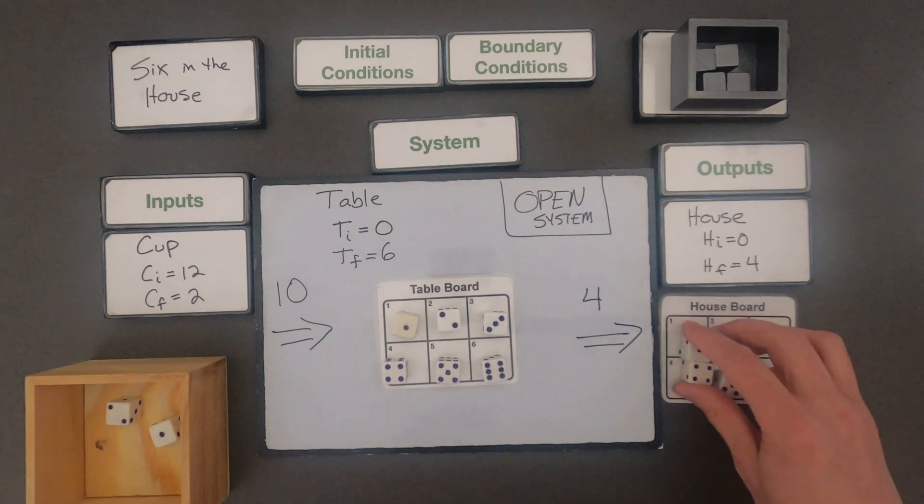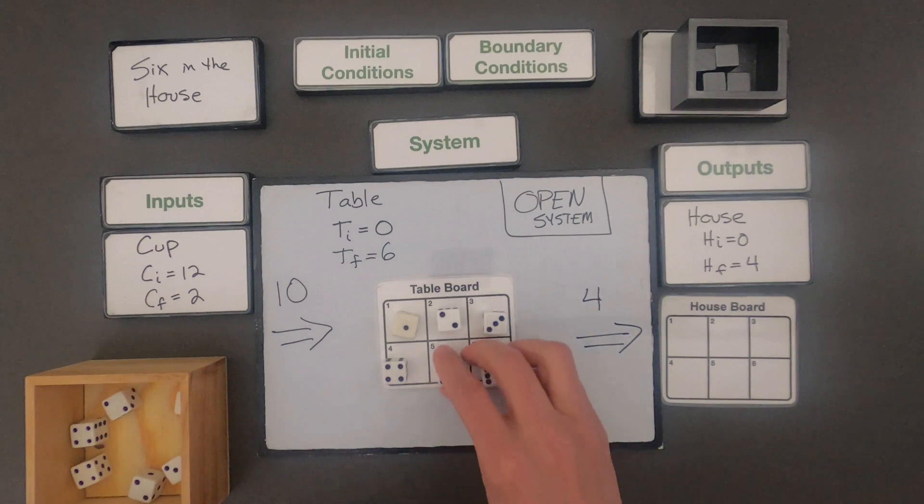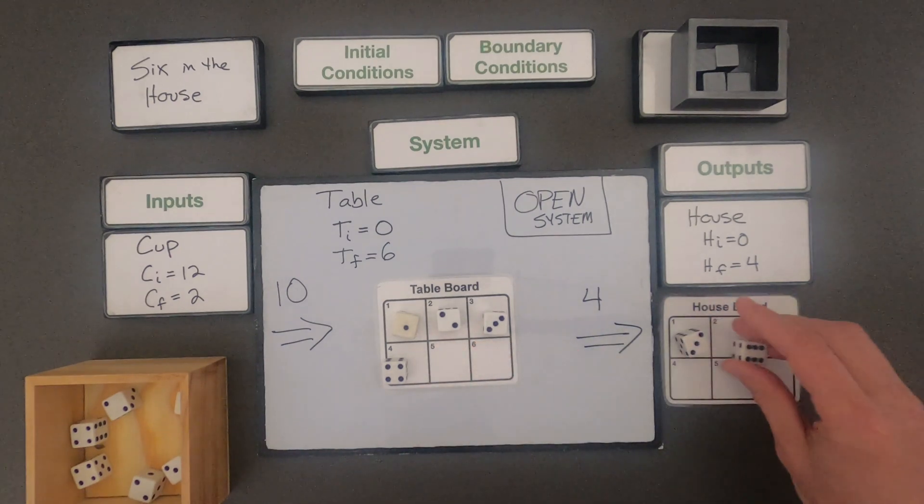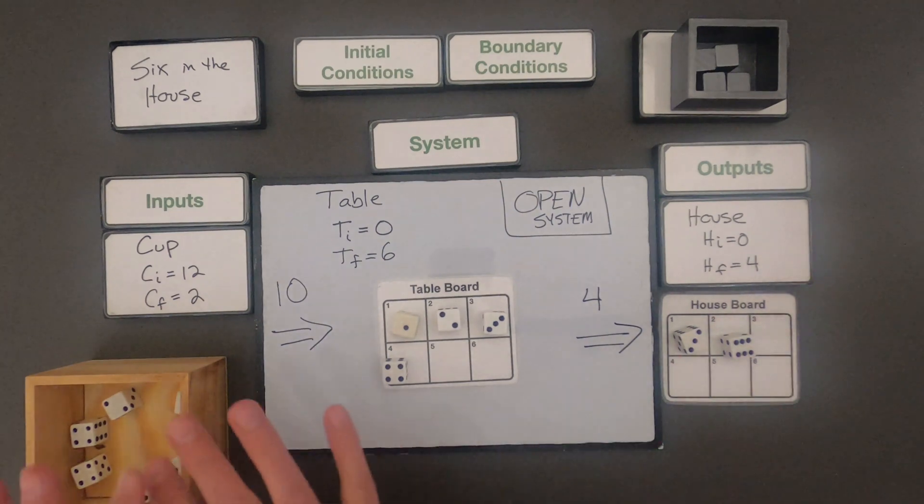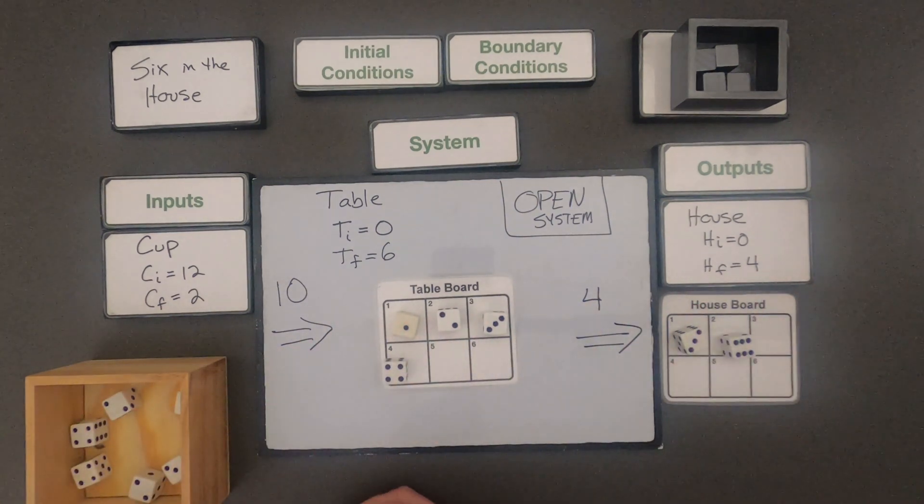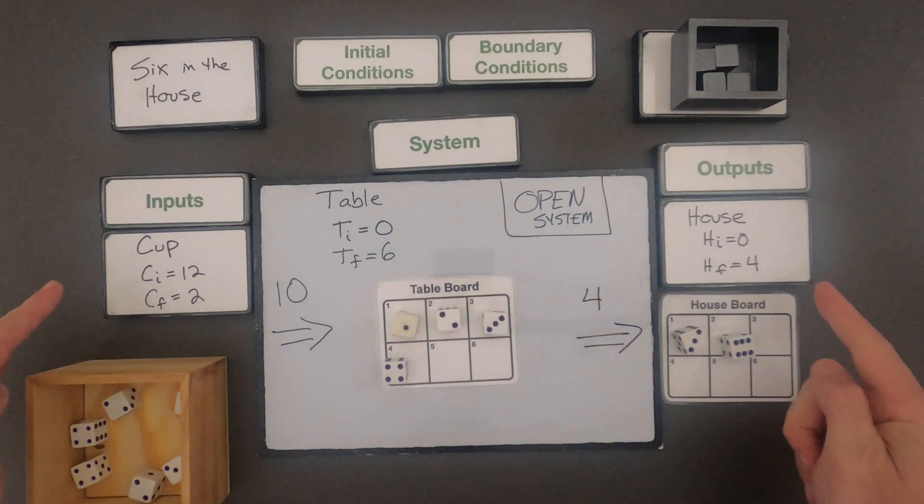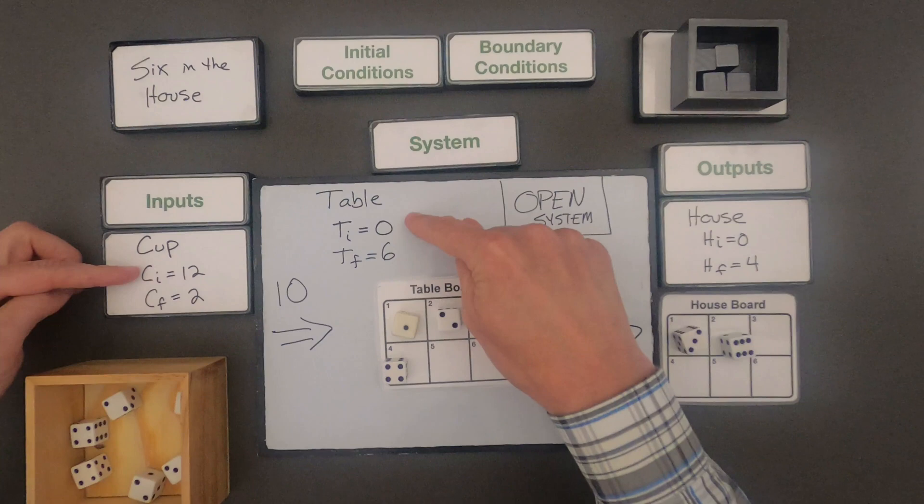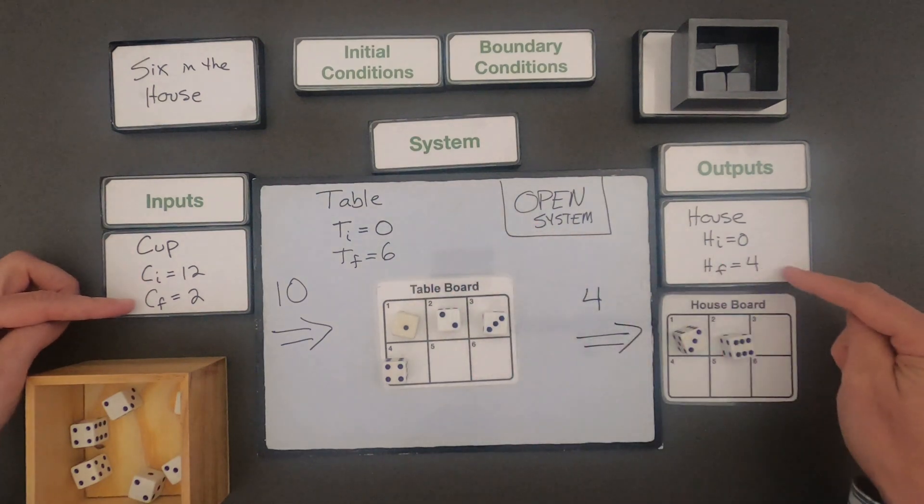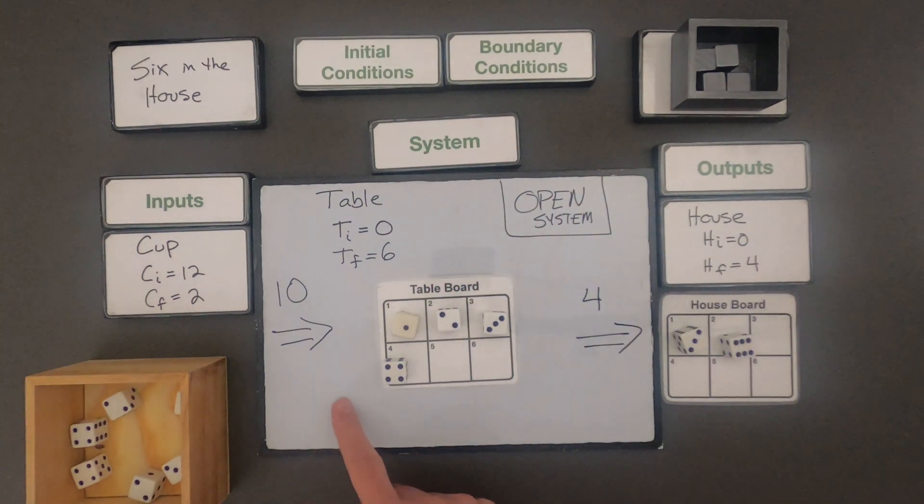Now you could imagine if we started the game with a different configuration, if we started it with an open system but different initial conditions, we would have different amounts that would be able to move across. And also randomness is going to have something to do with it. And so this is the first setup. All we're doing is number 1 defining the system, the inputs and the outputs. And don't forget we always have to define what's the initial conditions, then we can figure out the final conditions, and then finally we can figure out what's input into the system and what moves out of the system.